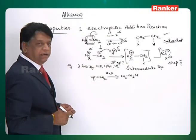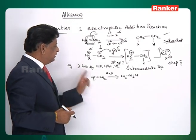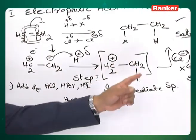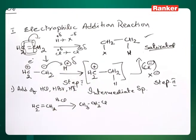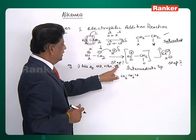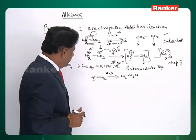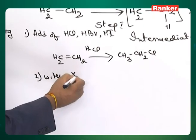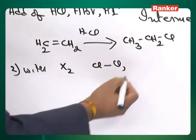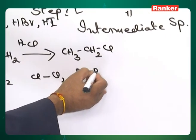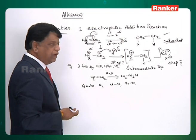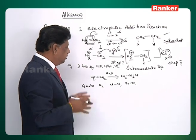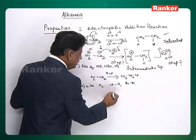If HBr is added you get ethyl bromide, and similarly ethyl iodide with HI. In all these, first the H-plus (plus party) is added, passing through the carbocation, then the minus party comes in the second stage. You can also use X₂ — examples are Cl₂ or Br₂. Addition of iodine also works in principle, but the reverse reaction takes place, so that is not a good reaction.